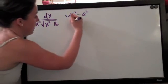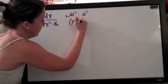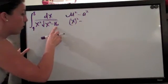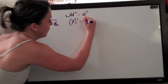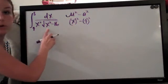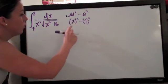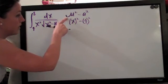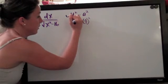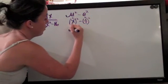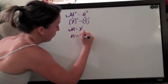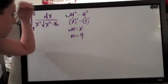We've rewritten x squared minus 16 as x squared minus 4 squared, which exactly resembles u squared minus a squared. From this we determine that u equals x and a equals 4.